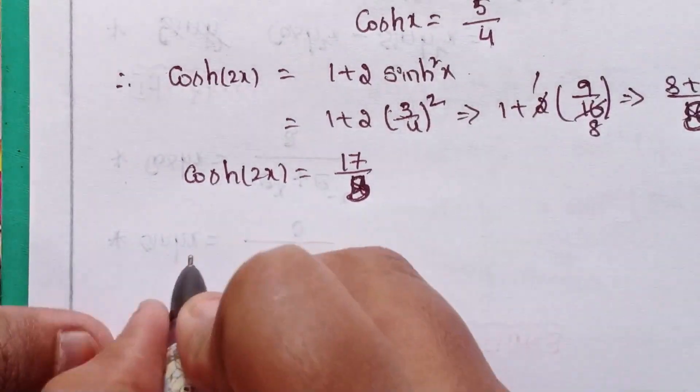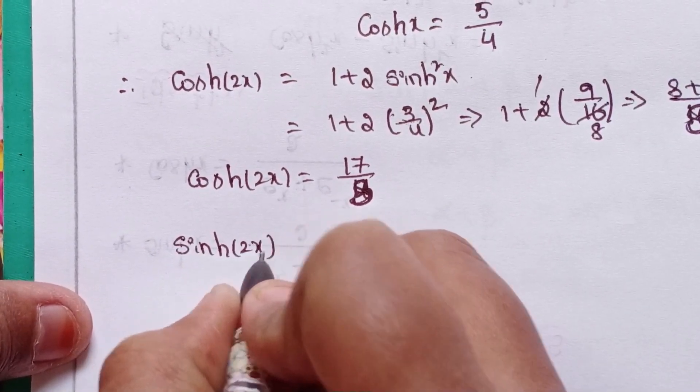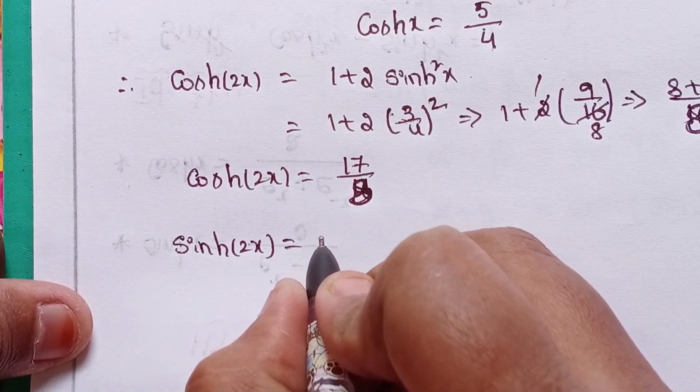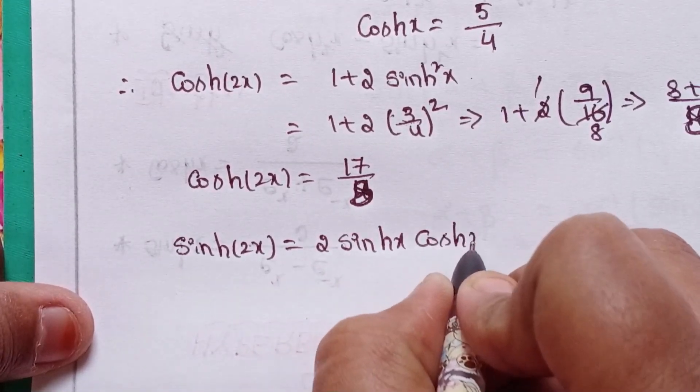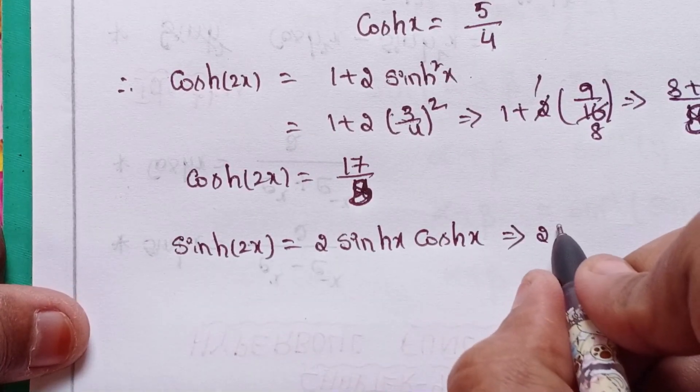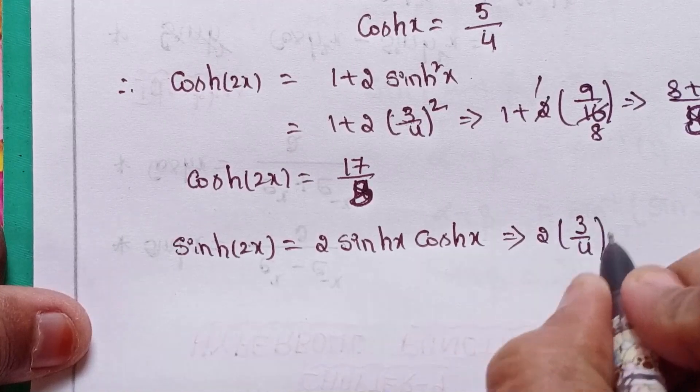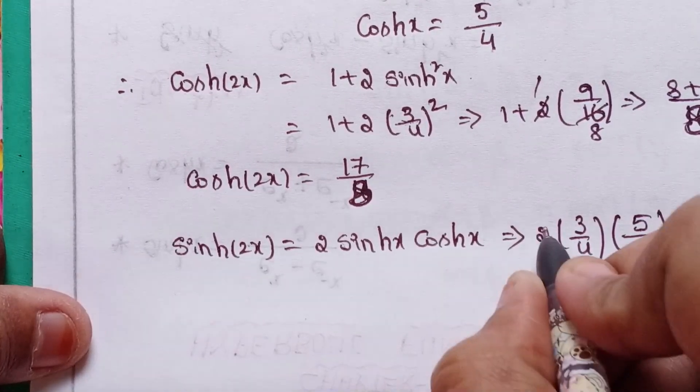Next, another one is sinh of 2x. The formula is 2 sinh x cosh x. So 2 times sinh x value is 3 by 4, cosh x value is 5 by 4.